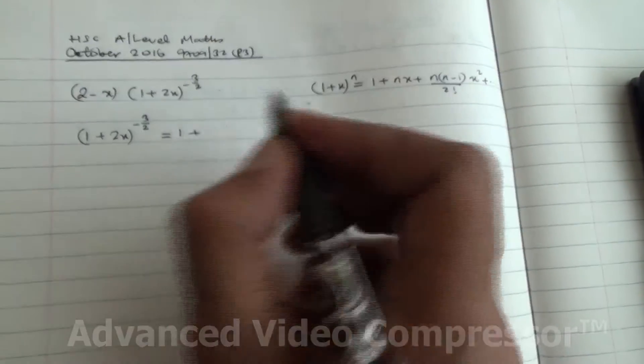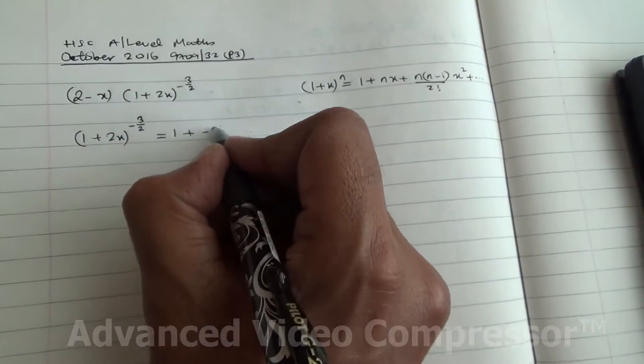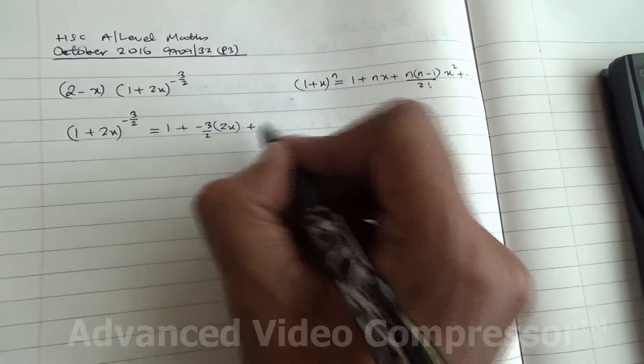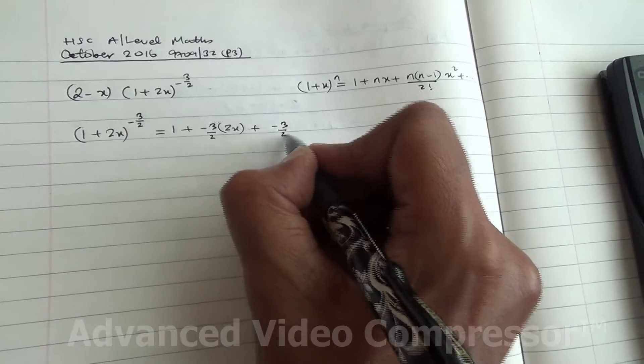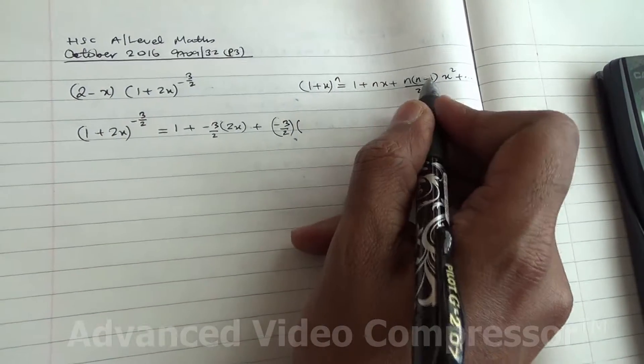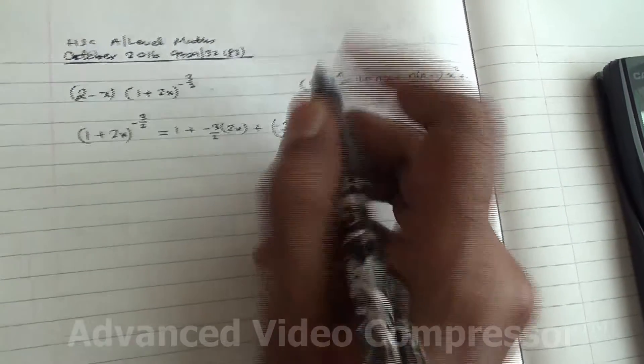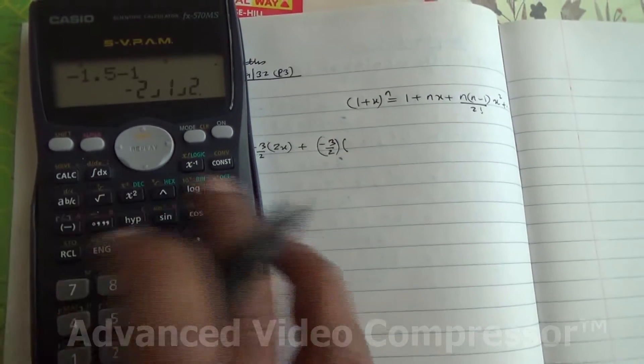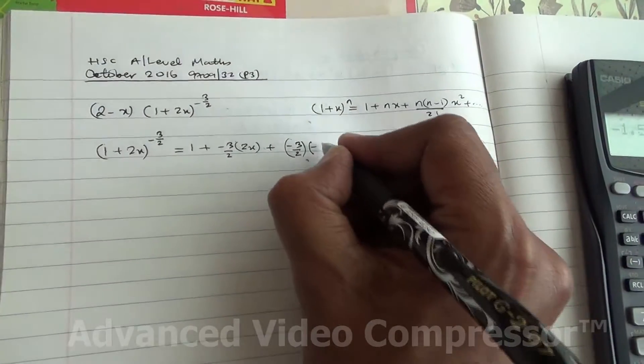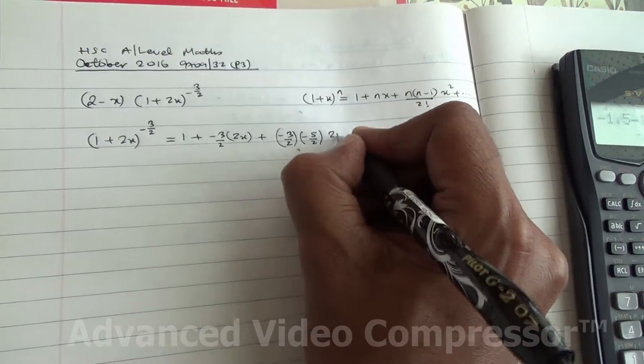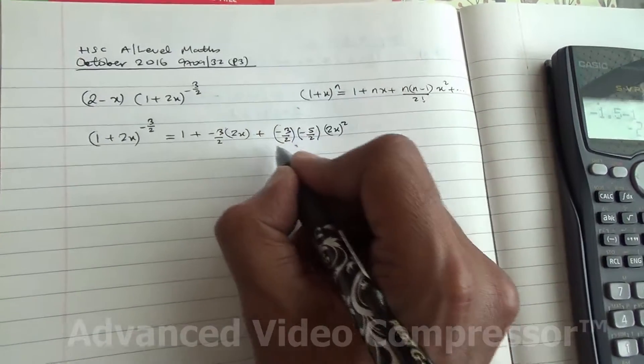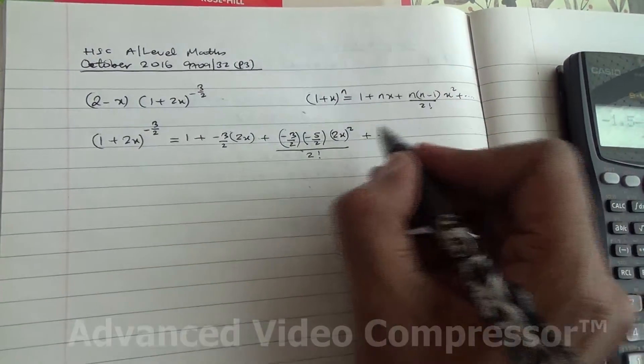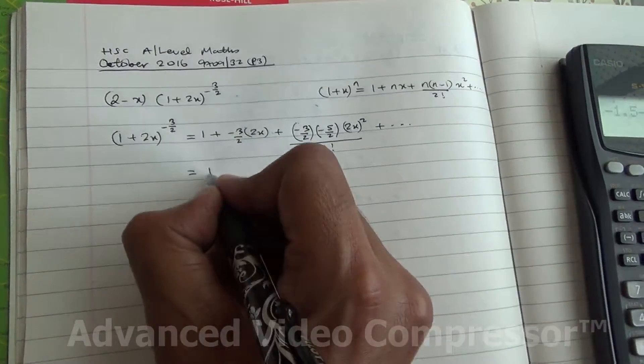So we've got then 1 plus nx, which is (-3/2) times x, x here is 2x, plus (-3/2) and minus 1. -3/2 minus 1 is -5/2, so we're going to say (-5/2)(2x)² divided by factorial of 2, plus and so on, up to including the term x squared, so we don't need any further than that.